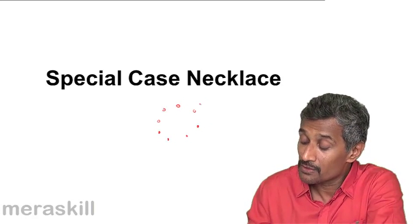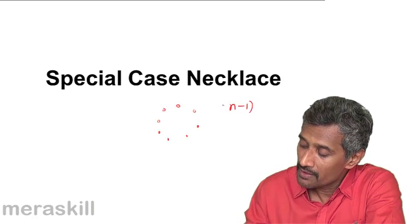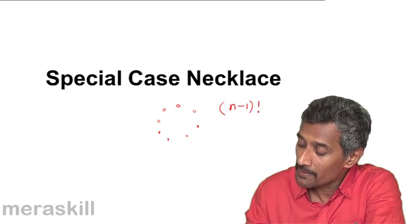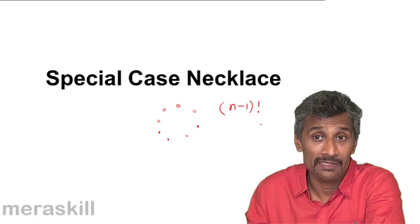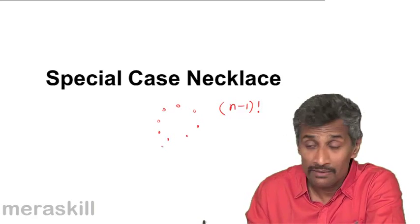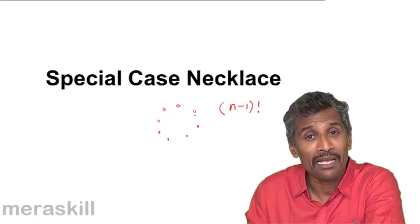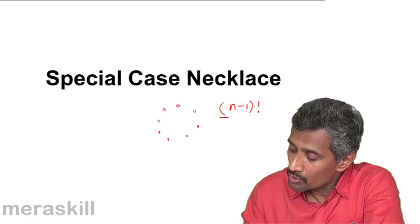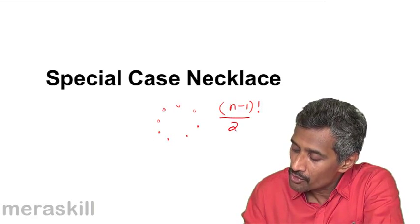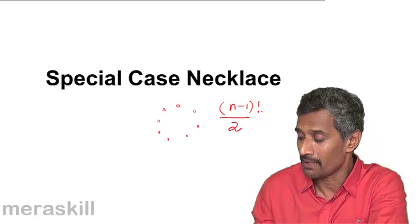Hence the total number of arrangements, since it is a circular arrangement - in a circular arrangement there are (n-1)! arrangements. But since it is a case of a necklace which is totally symmetrical, the clockwise as well as the anticlockwise are one and the same. Hence the total number of arrangements is going to be (n-1)!/2 or half (n-1)!.